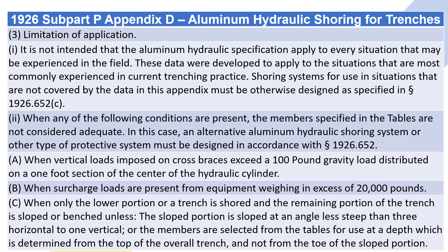a. When vertical loads imposed on cross braces exceed a 100-pound gravity load distributed on a 1-foot section of the center of the hydraulic cylinder. b. When surcharge loads are present from equipment weighing in excess of 20,000 pounds. c. When only the lower portion of a trench is shored and the remaining portion of the trench is sloped or benched, unless the sloped portion is sloped at an angle less steep than 3 horizontal to 1 vertical, or the members are selected from the tables for use at a depth which is determined from the top of the overall trench and not from the toe of the sloped portion.